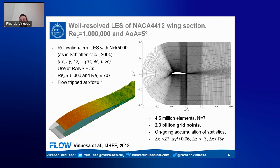Still, the simulation at a Reynolds number of 1 million had over 2 billion grid points, which is quite a large simulation that scales pretty well. But we want to explore other alternatives to harness all the potential of Nek5000 and its parallel capabilities.